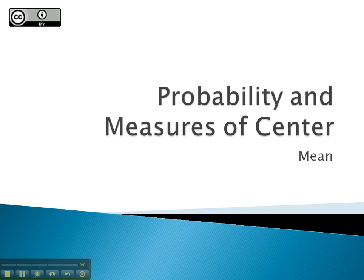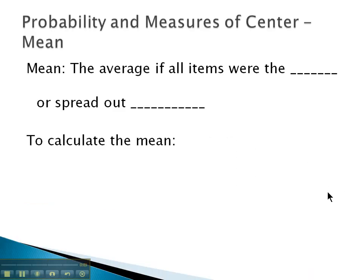In this video, we're going to take a look at a measure of center called the mean. There are several words that technically mean average. The mean is one such type of average. The mean is the average we would get if all the items were the same or spread out evenly.